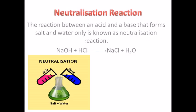The second type of double displacement reaction is neutralization reaction. It is a reaction between an acid and a base. When acid and base react, salt and water are formed. This is called a neutralization reaction, and the reaction takes place because the hydrogen ion from the acid combines with the hydroxyl ion from the base to form water. For example, NaOH plus HCl gives NaCl plus H₂O.